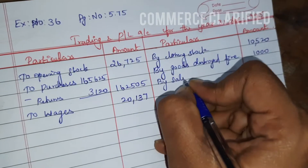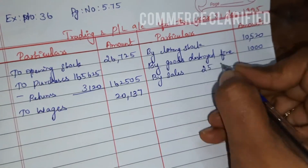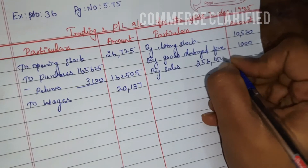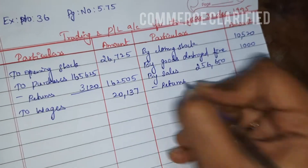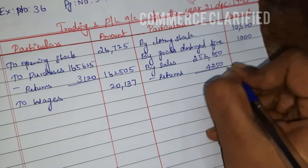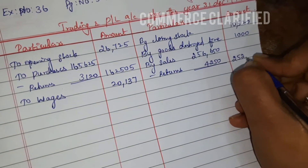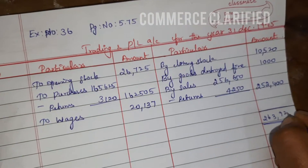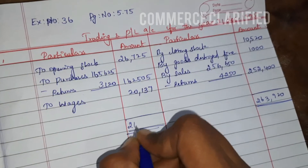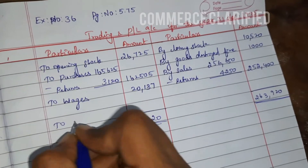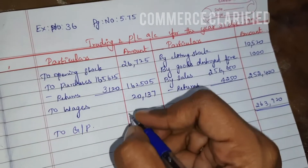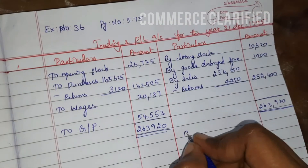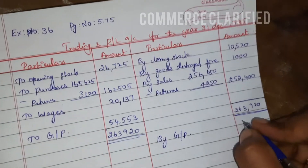On the credit side, sales are 2,56,650 minus returns of 4,250, giving an outer column of 2,52,400. The credit side total is 2,63,920 and the debit side is also 2,63,920. The remaining balancing figure is the gross profit of 54,553, carried down.